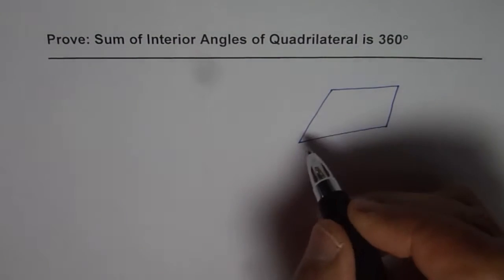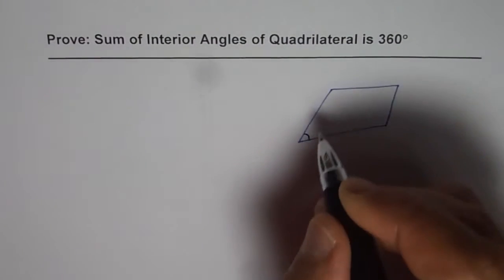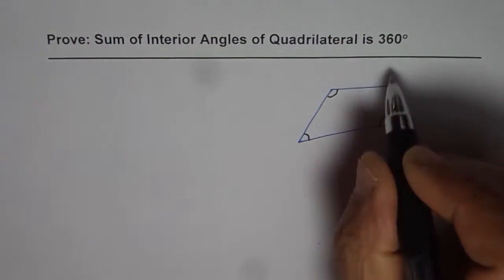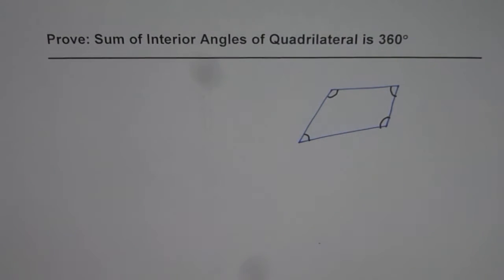We want to prove that these angles, all these angles, when you add them up, it should be 360 degrees. How can we do that?